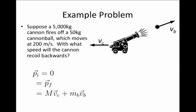We know most of the variables on the right-hand side of this expression because we're told the mass of the cannon, the mass of the cannonball, and the velocity of the cannonball.